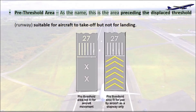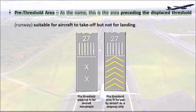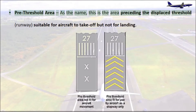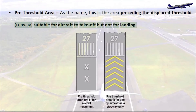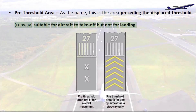Pre-threshold Area: As the name suggests, this is the area preceding the displaced threshold. It is suitable for aircraft to take off but not for landing.